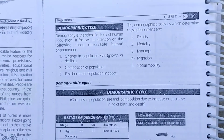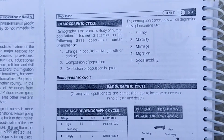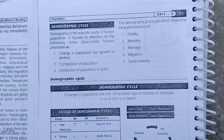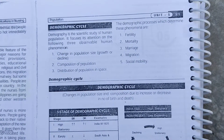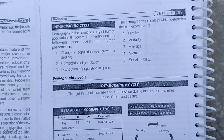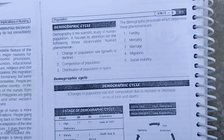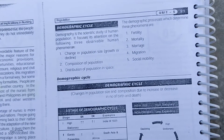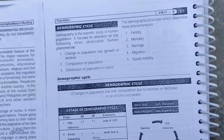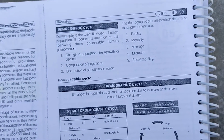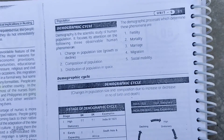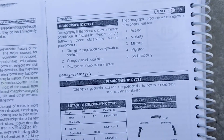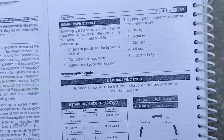First of all, let's understand what demographic means. Demography is a scientific study of human population. It focuses attention on the following three observable human phenomena. Simple meaning is that the scientific study of human population is called demography — for example, studying the population of India scientifically.